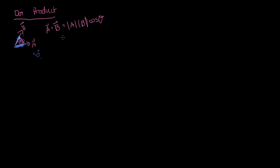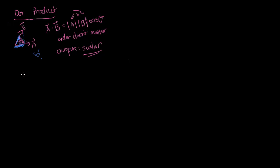Another key feature is that the output of a dot product is a scalar. In addition to using the length-times-cosine-theta approach, you can also compute this directly from the component expressions of A and B. In Cartesian coordinates, if we define vector A as A x-hat plus B y-hat plus C z-hat, and vector B as D x-hat plus E y-hat plus F z-hat, the dot product comes from the dot products of the individual components.